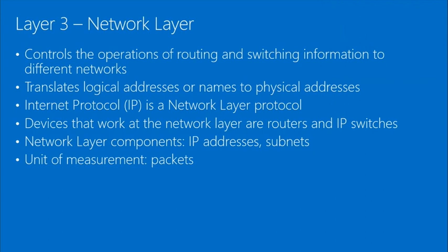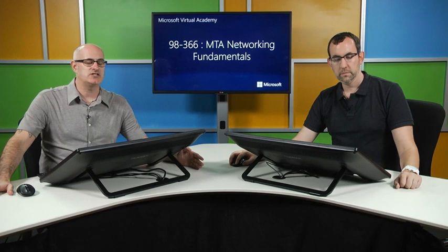Devices that work at layer three are routers and IP switches. Network layer components include IP addresses and subnets. The unit of measurement at this level is packets. Layer 3 switches work at the network layer using IP addresses instead of MAC addresses — same functionality, just addressing at a different layer.